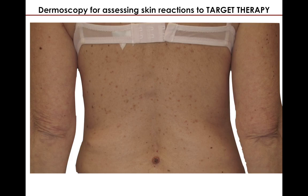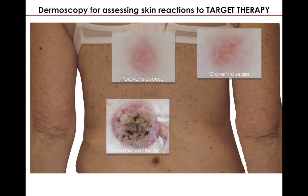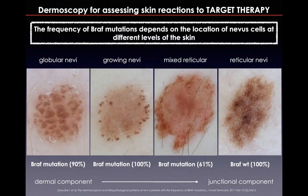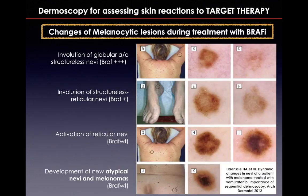In a female patient under vemurafenib and BRAF treatment for advanced melanoma, we observed together Grover's disease, keratoacanthoma, and dermoscopic changes in nevi. BRAF mutations are highly frequent in nevi classified as globular and mixed reticular-homogenous nevi with peripheral globules by dermoscopy, which correspond to dermal and compound nevi by histopathology. In contrast, most reticular pattern nevi — usually predominantly junctional nevi — do not commonly harbor BRAF-mutated clones.